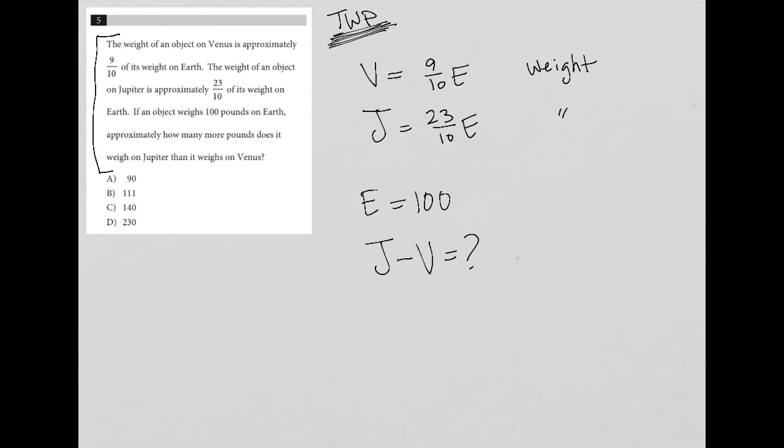How do I figure out what J is? Well, J is equal to 23 tenths times E. If E is 100, then J would be 23 over 10 times 100. I could do some cross-simplification here. 10 goes into 10 once, 10 goes into 100 ten times. Therefore, J is equal to 23 times 10, which is 230.